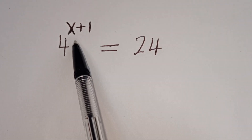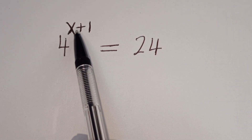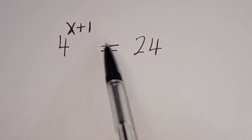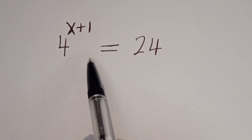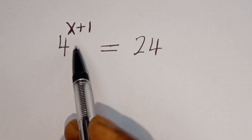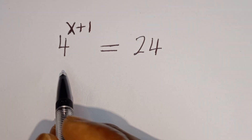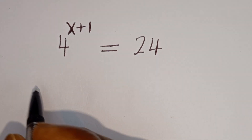Hello. How to solve for x in this equation? 4 to the power of x plus 1 is equal to 24. We are going to solve this equation in two different ways, using two different methods.